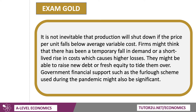It's not inevitable that production will shut down if the price falls below average variable cost. Some firms may think there's just been a temporary fall in demand or a short-lived unexpected rise in costs. If it's temporary and might be reversed, you don't necessarily have to shut down. The firm might be able to raise new debt by issuing bonds or bank loans, or raise fresh equity from shareholders to help tide them over. And don't forget government financial support, such as the furlough scheme, which we saw during the pandemic — it provided a significant wage subsidy for millions of workers, with up to 12 million furloughed at one point, particularly in travel, tourism, and hospitality.